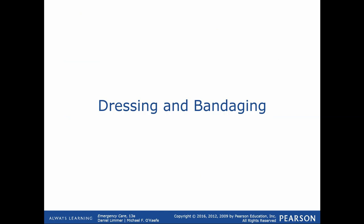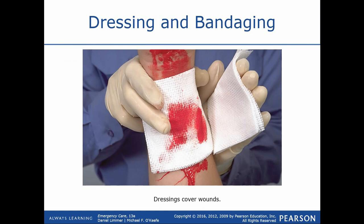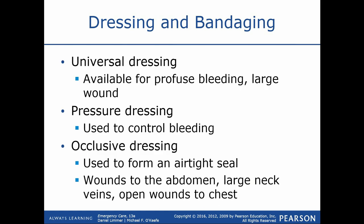From a definition perspective, a dressing is applied directly to the wound and a bandage is wrapped around it to keep it in place. We never want to remove a dressing because we don't want to break away any clot that's begun to form — we add additional dressings as it soaks through. Then if I take a roll of cling, an ace bandage, or whatever else and wrap it around the arm to keep the dressing in place, that becomes my bandage.